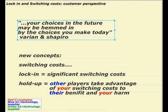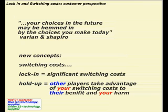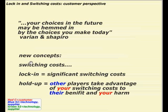This is just a little add-on to the end of Lecture 6, because I can't really afford any more time to spend on sequential games at the moment. We'll come back to these basic ideas of switching costs. We were looking at Varian and Shapiro, and this basic idea that your choices in the future are going to be hemmed in by the choices you make today. The idea here is that you're going to have some switching costs — that's a new concept we need to look at. This is just an add-on from what we did in Lecture 6.